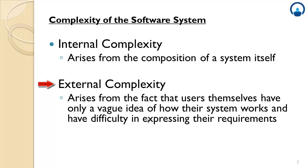External complexity means sometimes the users themselves are not aware of the fact that what they want. They only have a vague idea of how their system works and don't know the internal technicalities — for example, if an order is processed then where that order data goes. They have difficulty in expressing their requirements and are not very strong at explaining to the developer what exactly they want in the software. So these are called as the external factors which also affect the software system.